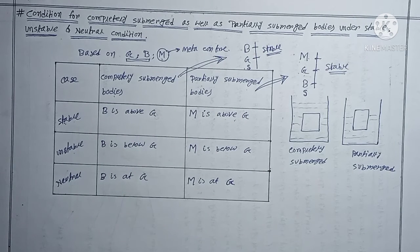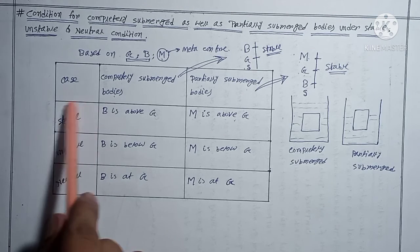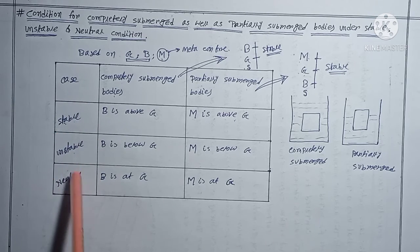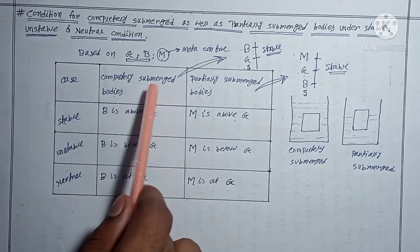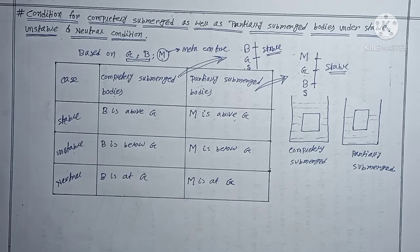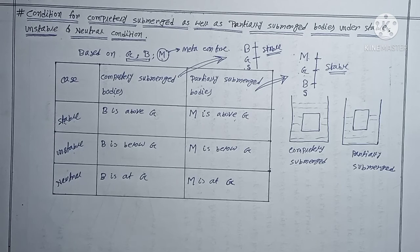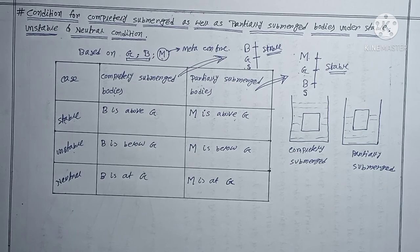So I think you now easily understand how to remember the conditions of stable, unstable, and neutral for partially submerged as well as completely submerged bodies. If you find this video helpful, please like, share with your friends, and subscribe to the channel to get more helpful content. Thank you.